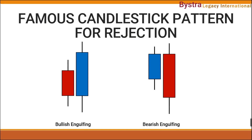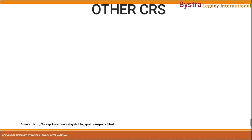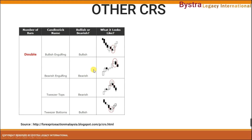Let's look at some of the CRS — the candlestick reversal signal. The most common and most famous pattern that traders always use is the engulfing candle. We have learned the bullish engulfing and the bearish engulfing in an earlier class. There are also patterns called the tweezers tops and tweezers bottoms. You can find all of these on Google and do further research, but you don't need to go into them too deeply.